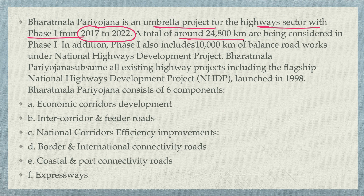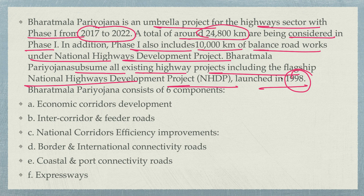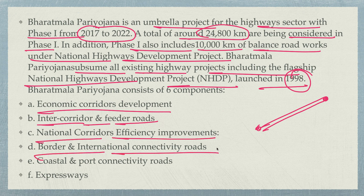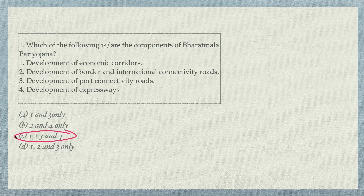In Phase 1, around 24,800-25,000 km are being considered, and it also includes 10,000 km of balance road work under the National Highway Development Project. The components include economic corridor development, inter-corridor and feeder roads, national corridor efficiency improvement, border and international connectivity roads connecting Pakistan, Nepal, and Bhutan borders, and coastal and port connectivity roads covering Gujarat, Maharashtra, Karnataka, and Kerala coastlines. So the answer is option C.